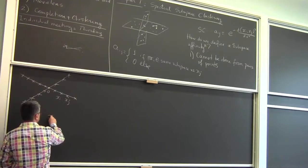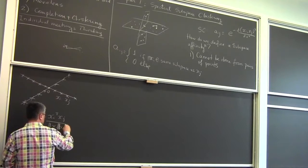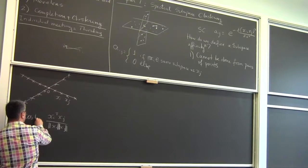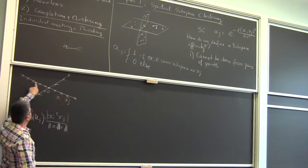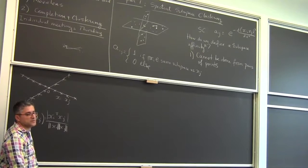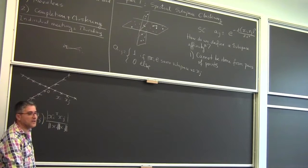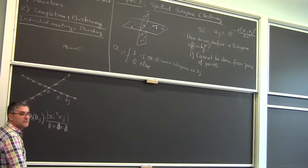Suppose I pick two points x_i and x_j that are in the same subspace — the same line in this case. How would I know they are in the same subspace? You could just compute the dot product between x_i and x_j, normalized. The normalized dot product gives the cosine of the angle between the two vectors. I take the absolute value to ensure that whether I have a point on one side or the other, the angle is always between 0 and 90 degrees — so this is really the acute angle between any two points.